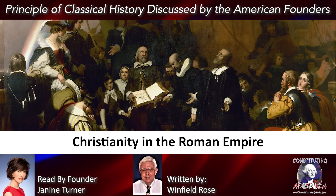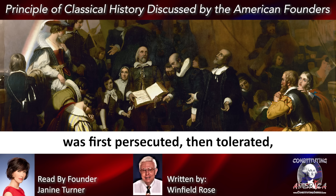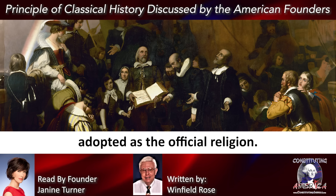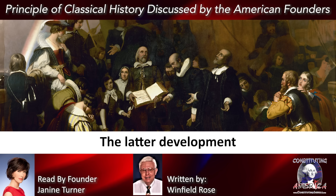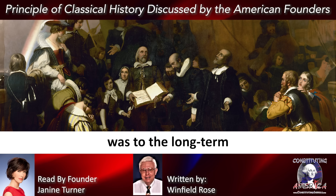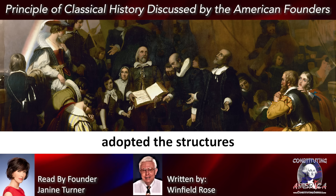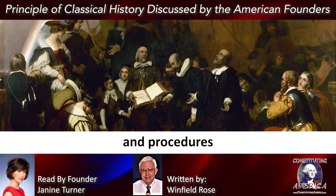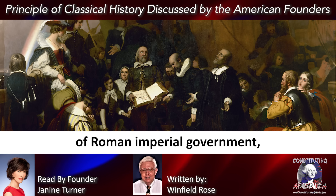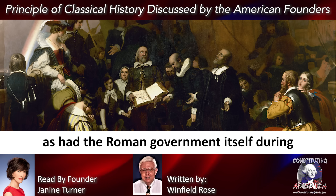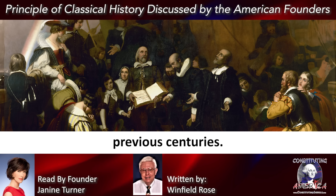Christianity in the Roman Empire was first persecuted, then tolerated, and later adopted as the official religion. The latter development was to the long-term detriment of the faith, because as the Church adopted the structures and procedures of Roman imperial government, it became ever more corrupt, as had the Roman government itself during previous centuries.